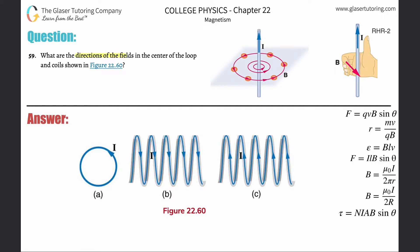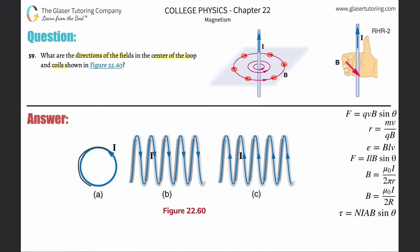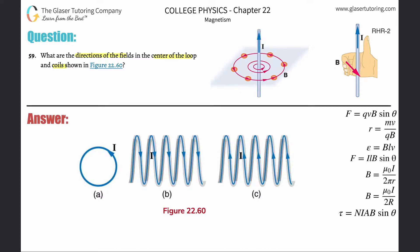Number 59: what are the directions of the fields in the center of the loop and the coils shown in figure 22.60? Let's take a look at letter A. We're going to use right-hand rule number two. Your fingers are curling in a counterclockwise direction, and the only way for your thumb to be pointing while your fingers curl counterclockwise is if your thumb is pointing out — towards you, or out of the computer screen. We denote that with a little dot.